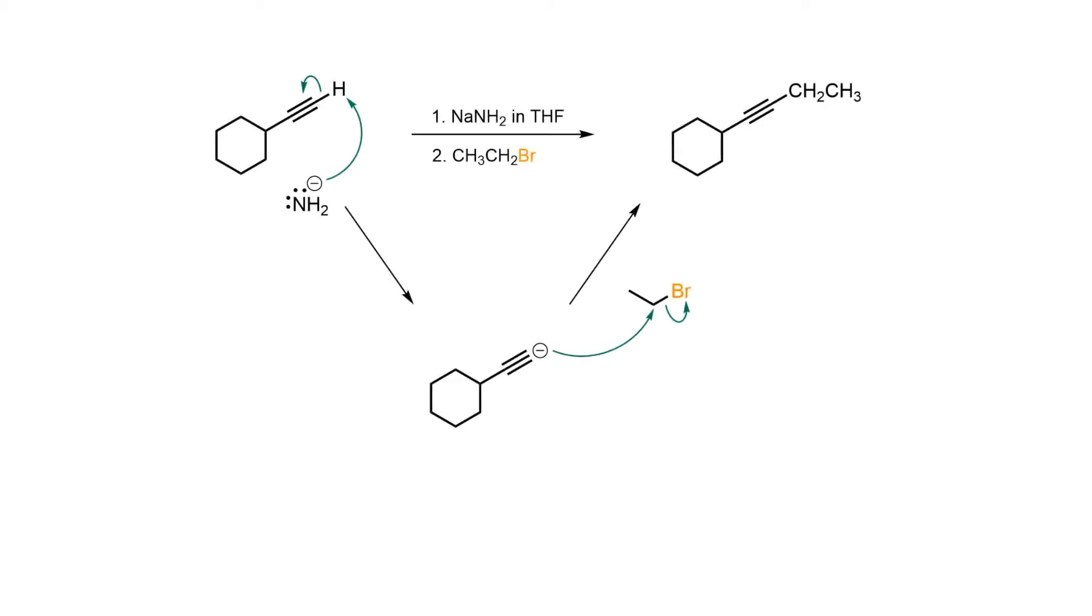A strong base such as sodium amide is used to deprotonate the weakly acidic terminal alkyne and send the equilibrium completely to the conjugate base. The nucleophilic acetylide anion is then treated with a primary or secondary alkyl halide which affects an SN2 reaction and the chain extended alkyne is formed.